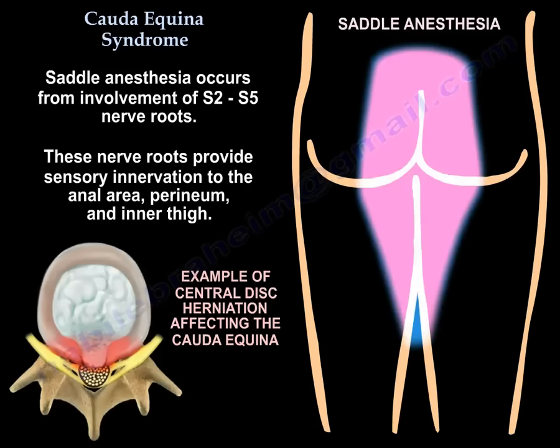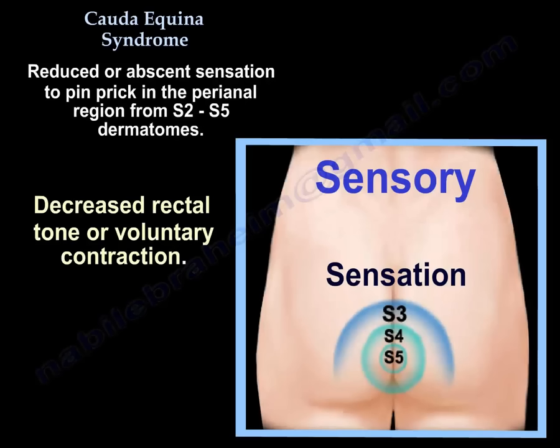Saddle anesthesia occurs from involvement of S2 to S5 nerve roots. These nerve roots provide sensory innervation to the anal area, the perineum, and the inner thigh. You will find reduced or absent sensation to pinprick in the peri-anal region from S2 to S5 dermatomes, and decreased rectal tone or voluntary contraction.